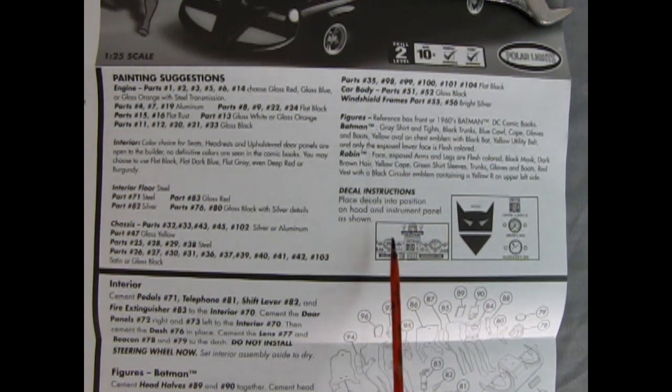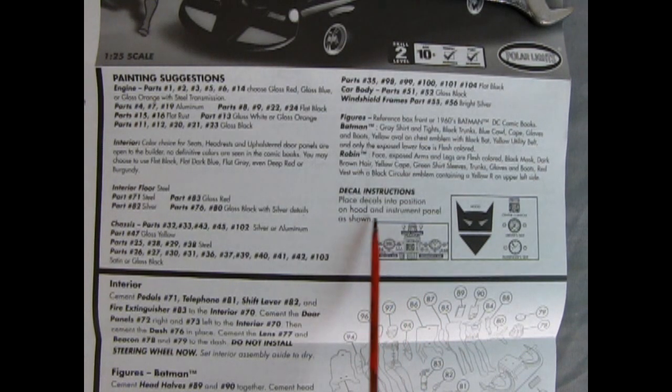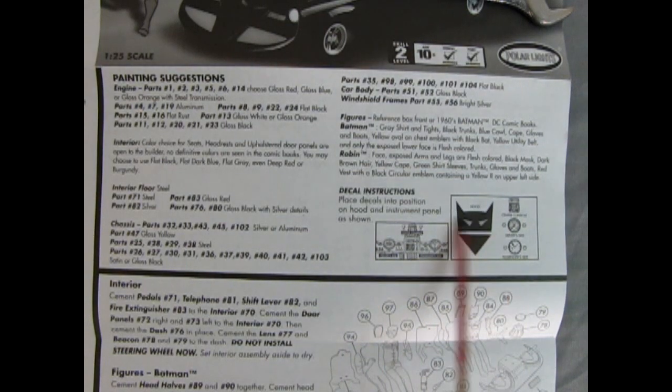Here's the decal instructions. So this model does come with decals where the die-cast version did not. It says, place decals in position on hood and instrument panel as shown. So here it is, all here.